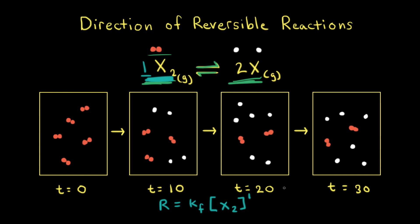Next, we can write the rate law for the reverse reaction. The rate of the reverse reaction equals the rate constant k_r. In the reverse reaction, 2X combines to form X2, so this is times the concentration of X. Since we have a coefficient of two, we raise the concentration of X to the second power.